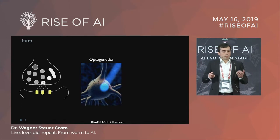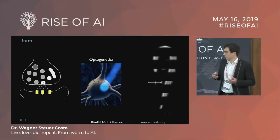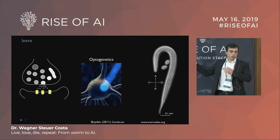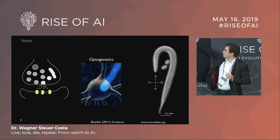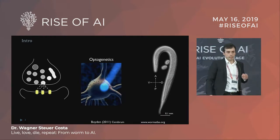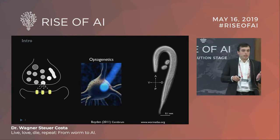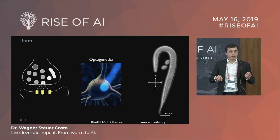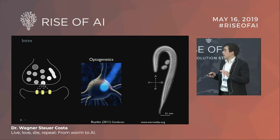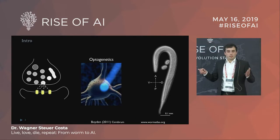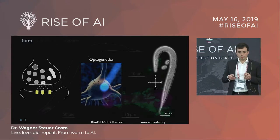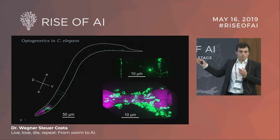The organism we apply these methods to is C. elegans — a small worm, one millimeter in size. This is the head with its mouth; you can see eggs inside. It is transparent, genetically tractable, and its genome is known, making it easy to modify. Importantly, it always has exactly 302 neurons, and all cells are always in the same position, making it easy to compare effects across animals.